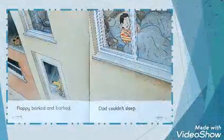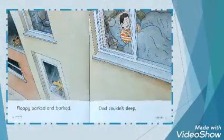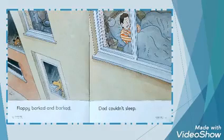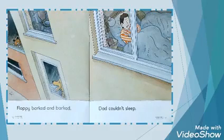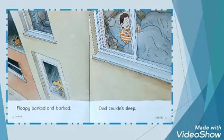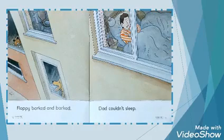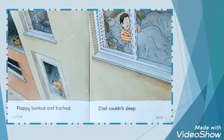Now move to another page. Floppy barked and barked — dad could not sleep. Here you can see that Floppy kept barking, and due to this unpleasant and noisy environment, dad could not sleep and became very angry at Floppy. So dear students, that was what we learned in the previous lesson.